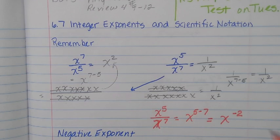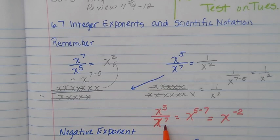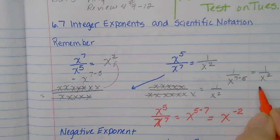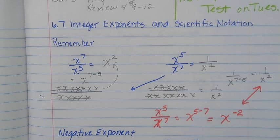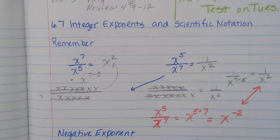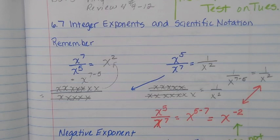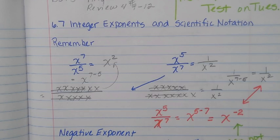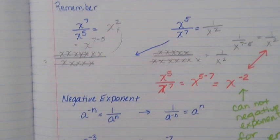So what's the correct answer? Five over x to the fifth divided by x to the seventh — we've got two different-looking answers, and both look like correct work. But what's wrong with the second one is we cannot have negative exponents for an answer.